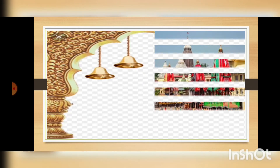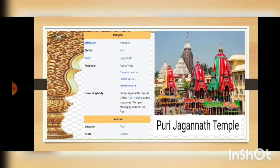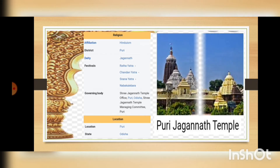The next temple we will learn about today is Jagannath temple, which is situated in Puri — a Hindu temple in the district of Puri. The deity worshipped here is Lord Jagannath. The festivals celebrated in this temple are Rath Yatra, Chandan Yatra, Snana Yatra, and Nabha Kalibara. It is located in the state of Odisha. Here you can see a distant view of the temple — it is really a beautiful temple.